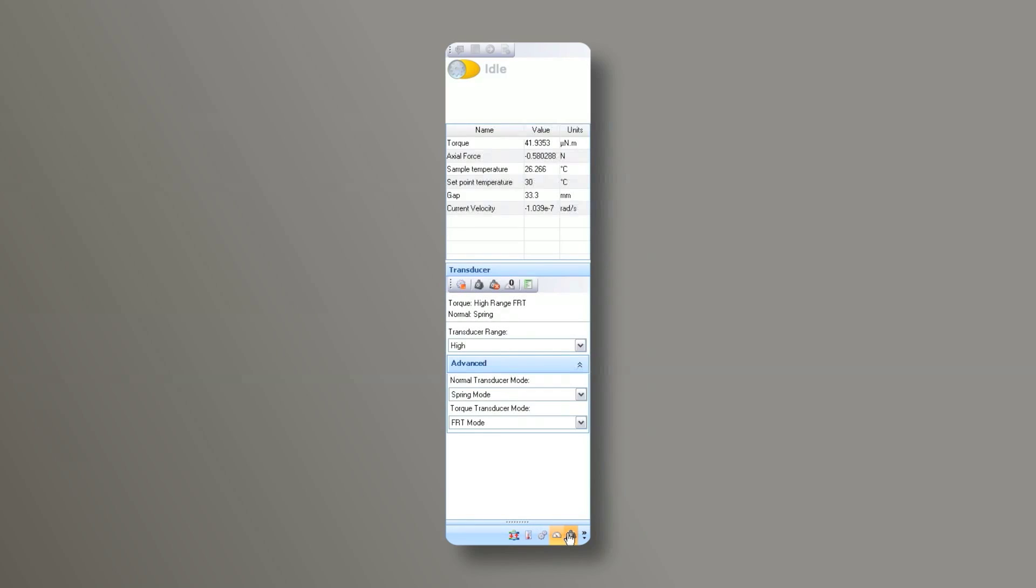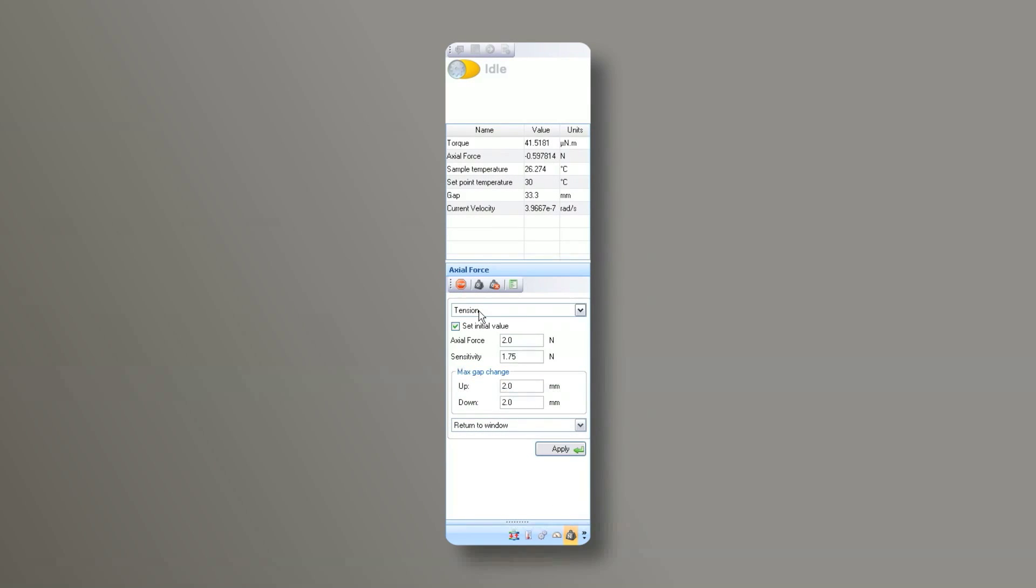Using the control panel, choose axial force control and apply 2 newtons of axial force with a sensitivity window of 1.75 newtons in the tension direction.